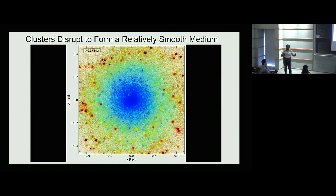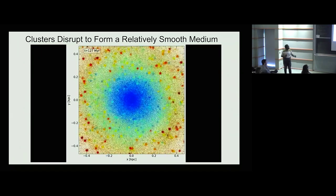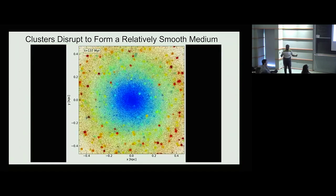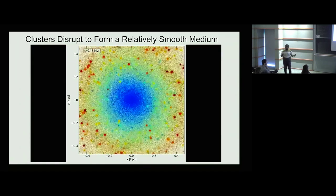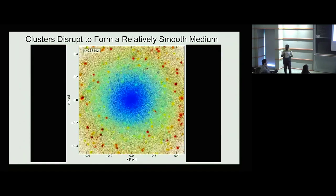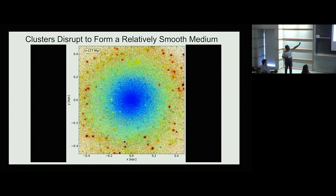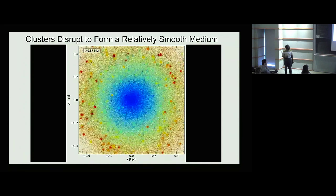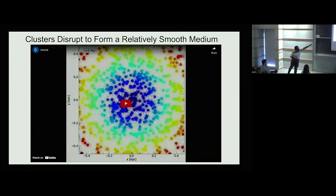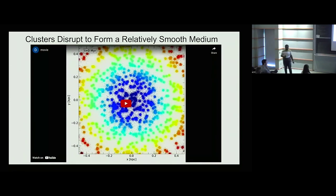They just quickly disrupt one another. There's also the analytical NFW halo doing tidal stripping. So the clusters destroy each other over timescales of 100 megayears. We find that there's a nice smooth disk forming in the central region. Some clusters do survive, but we have a nice smooth disk forming in the central region.